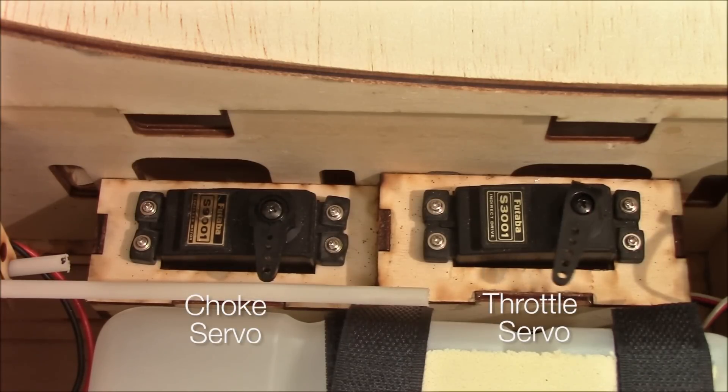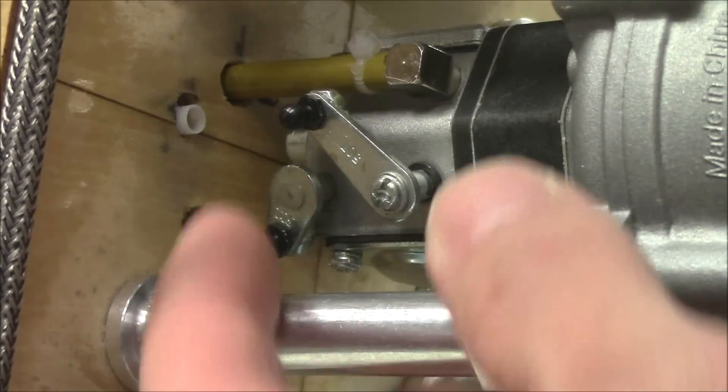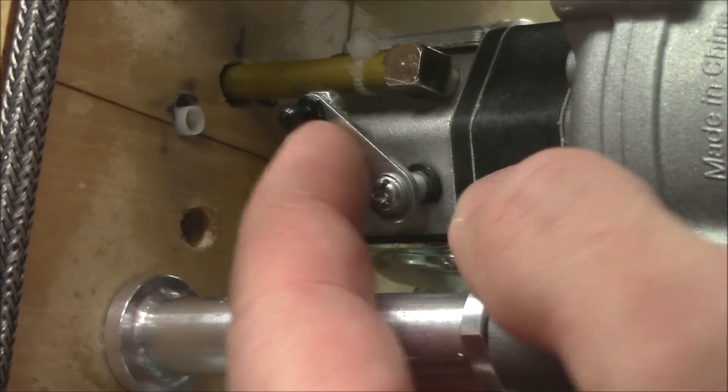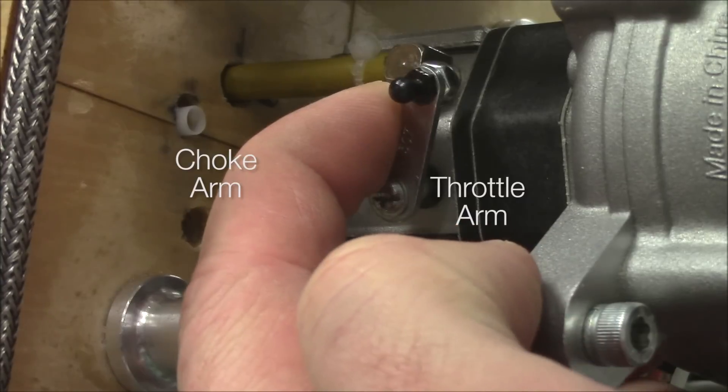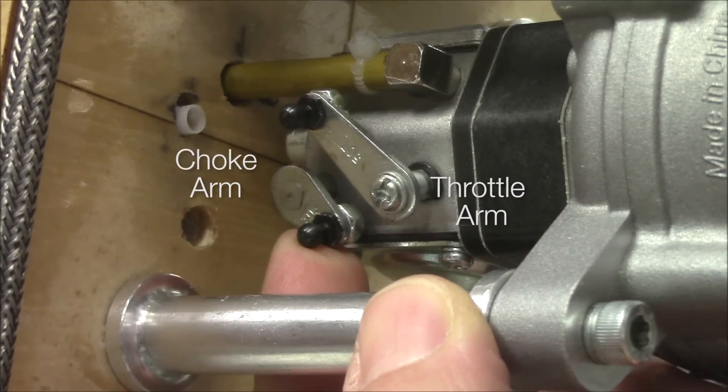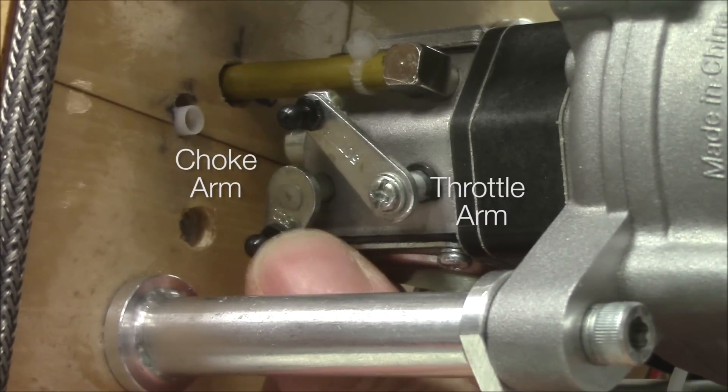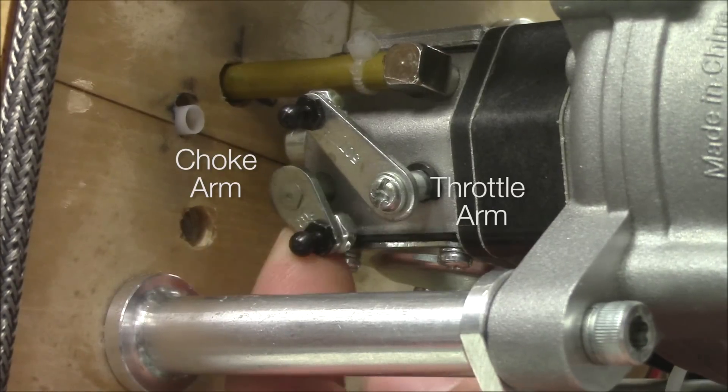First I will install the choke linkage. The outer push rod tubes have already been cut to length and glued into place. The push rod tubes are lined up with the travel of the throttle choke arms on the engine carburetor. I installed ball studs onto the arms, but you can connect the push rods in whatever way you see fit.